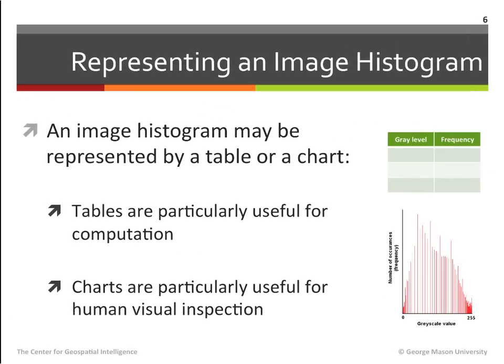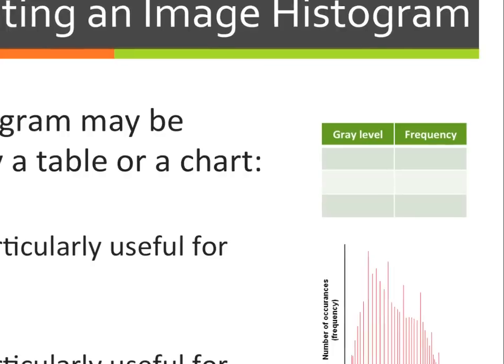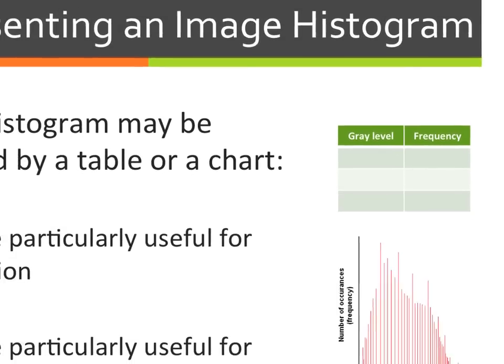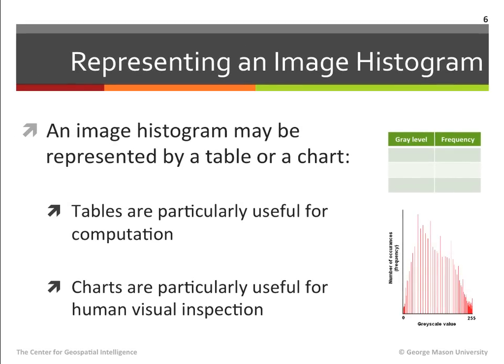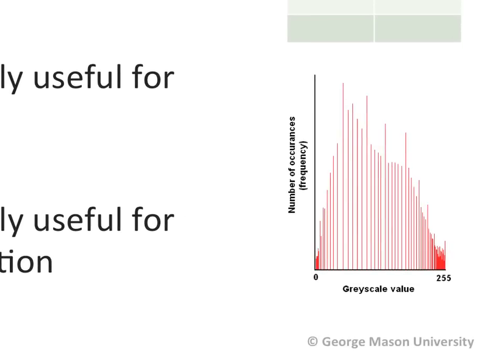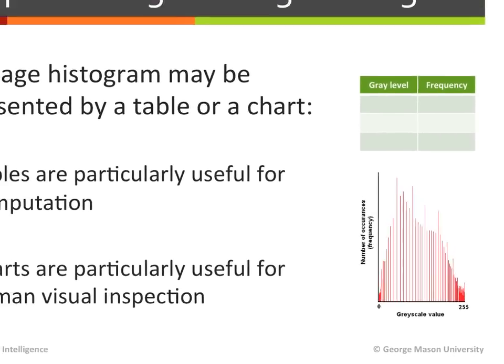Once the histogram is calculated, it can be represented in two ways. As a table of numbers, where the first column corresponds to the gray level values in the image and the second column corresponds to the number of pixels that have that gray level respectively. Or as a chart, typically a bar chart, in which each bar corresponds to a gray level and the height of the bar corresponds to the number of pixels having that gray level.